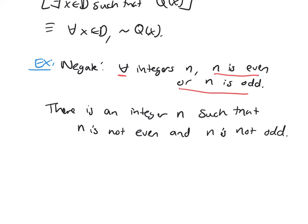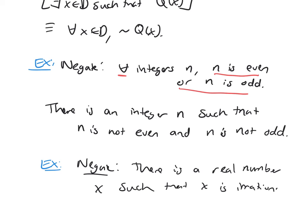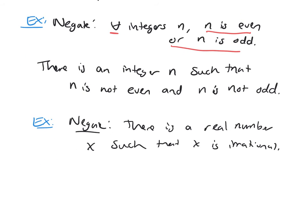Let's do another negation example. Negate: 'there is a real number x such that x is irrational'. There is means you have the existential quantifier, so when you negate it, it's going to become the universal. So the negation should be: all real numbers x are rational.